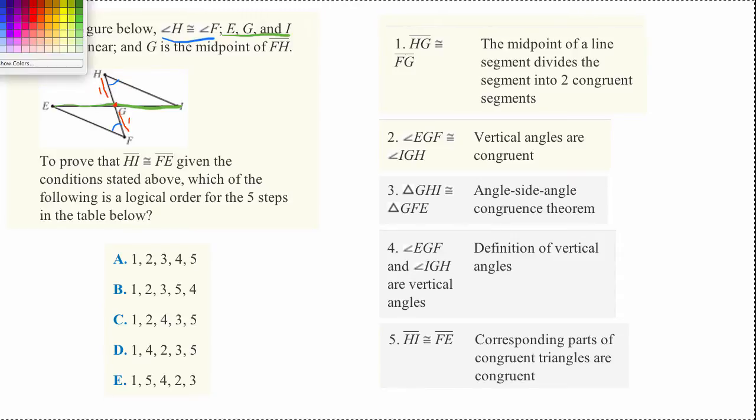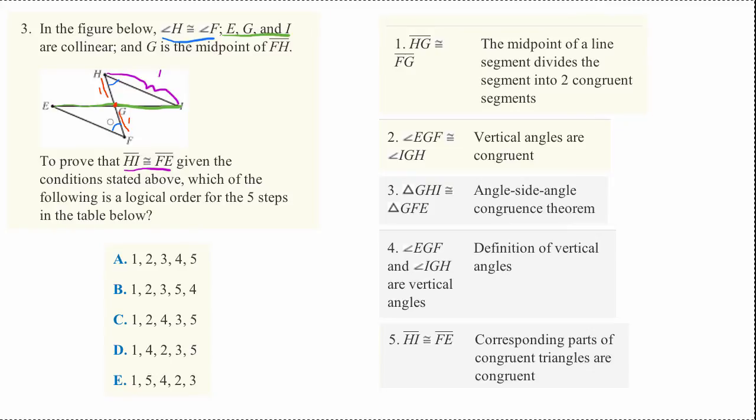Then, they're asking us to prove that HI has the same distance, it's congruent to FE. So here, the line segment, this distance from H to I, whatever distance that is, is the same distance as the distance between F and E right here.